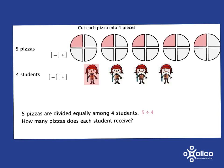Because we've cut each pizza up into four pieces, each of those pieces is a quarter of a pizza. And so each student will get a quarter of a pizza from the first pizza, a quarter of a pizza from the second pizza, and so on. So in total, they'll get five quarters of a pizza. So they get five quarters. And this shows us that five divided by four gives the answer five quarters. So five divided by four is the same as five quarters.